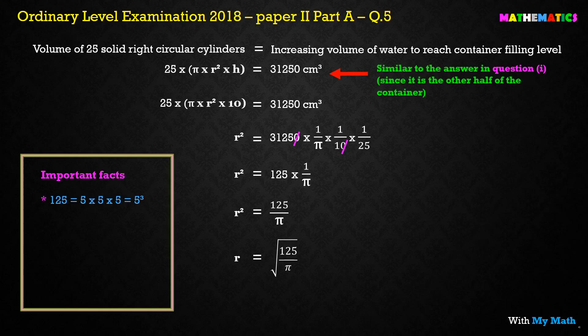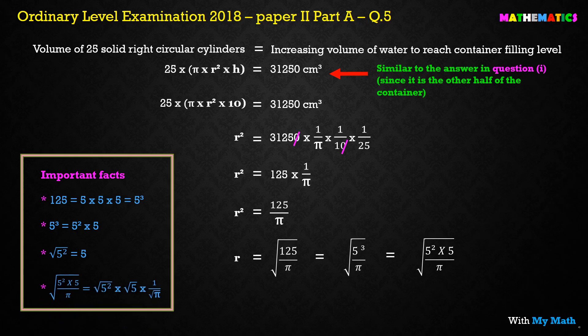125 can be written as 5³, because 5 × 5 × 5 = 125. We can also write 5³ as 5² × 5¹, meaning 5 squared multiplied by 5. Since √(5²) = 5, the square root cancels out the squared term. Therefore r = (5√5) / π, where π is in the denominator from the cylinder volume formula.